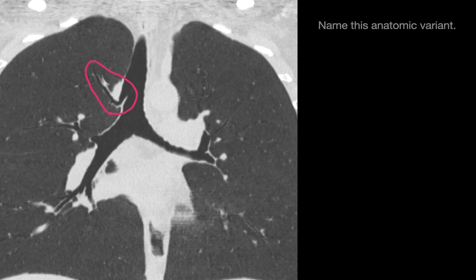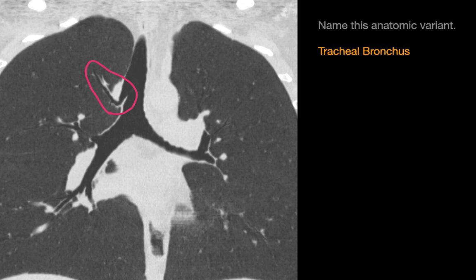The anatomic variant is circled in magenta here. It's an airway that supplies the right upper lobe. In this particular case, there's also a normal right upper lobe bronchus coming off of the superior margin of the right main stem bronchus, which the yellow arrow is pointing to. The anatomic variant is a tracheal bronchus.